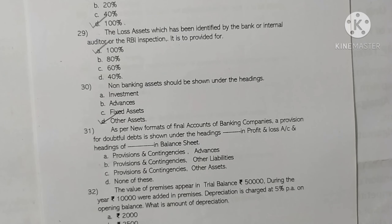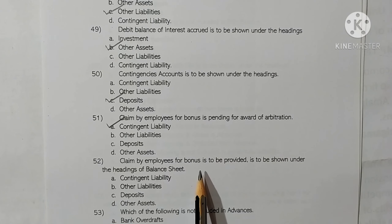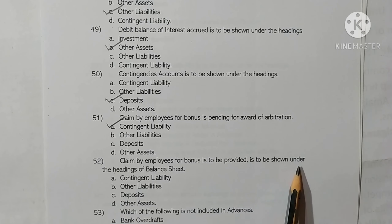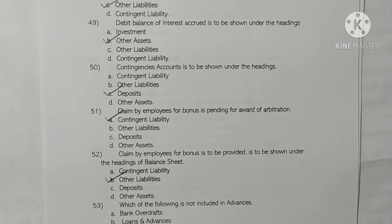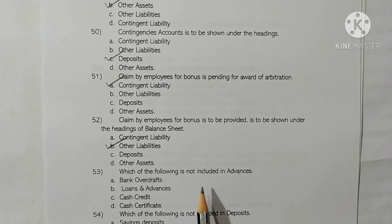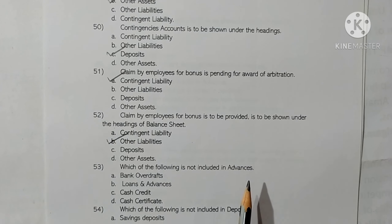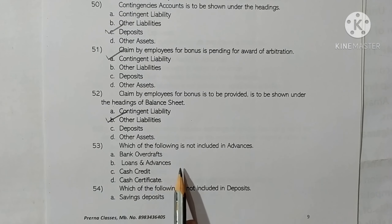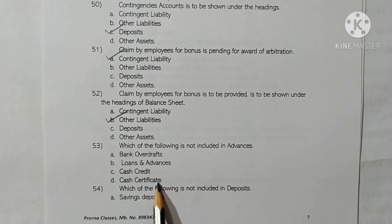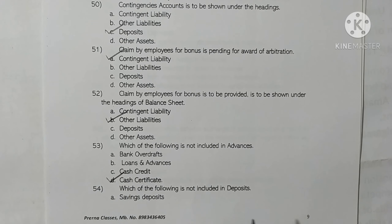Claim by employees for bonus pending award of arbitration is a contingent liability. Option A is correct. Claim by employees for bonus to be provided is shown under 'other liabilities' in the balance sheet. Option B is correct. Which of the following is not included in advances? Bank overdraft, loans and advances, cash credit, and cash certificate. Cash certificate is a deposit and not included in advances. Option D is correct.